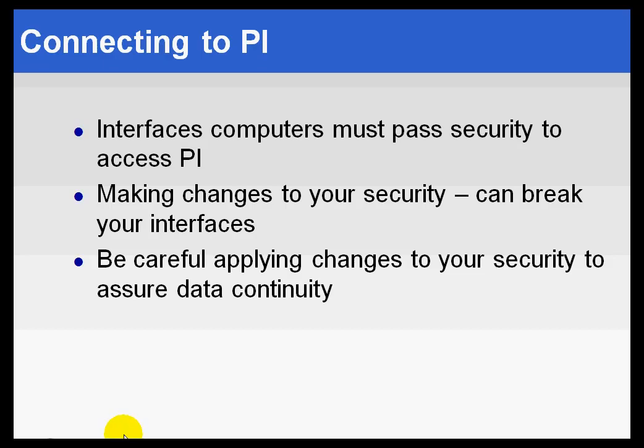We've just demonstrated how the connection mechanism works, and we used ProcessBook as an example. But I wanted to make the point that interfaces also have to pass the security test to AccessPi. In fact, they need write access, so typically they do that using trusts. We will discuss trusts a great deal later on. I just want to emphasize: be careful about making any drastic security changes. They can break the interfaces, and we don't want that to interfere with data collection.